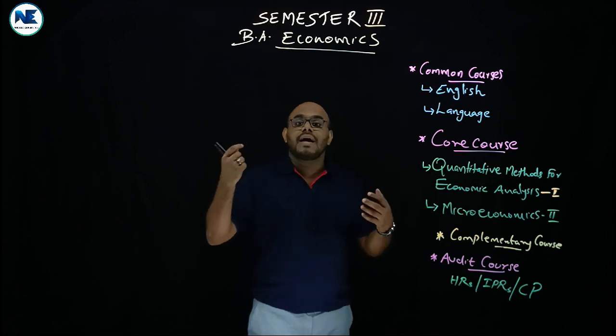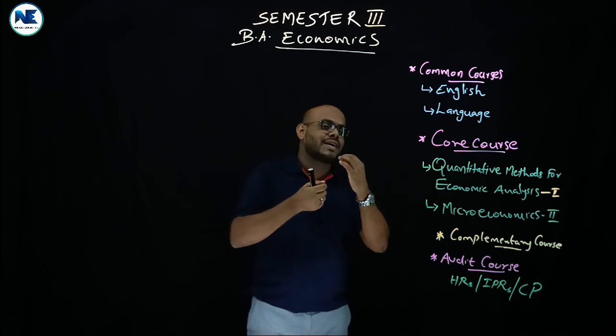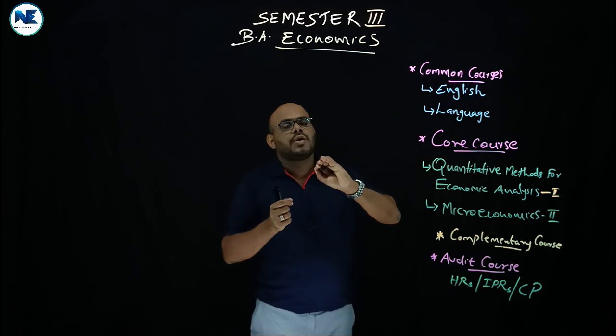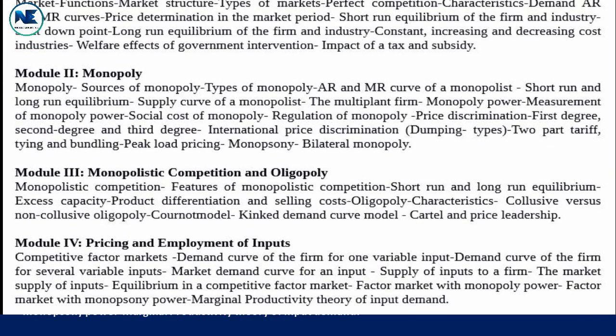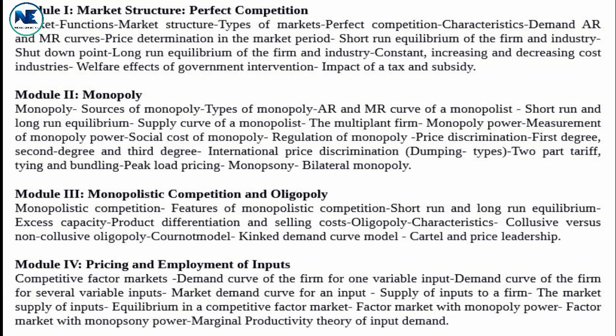This also includes the concept of marginal productivity theory. In Microeconomics 2, Module 1 is market structure and perfect competition. Module 2 is monopoly. Module 3 is monopolistic competition and oligopoly. Module 4 is price and employment of inputs.